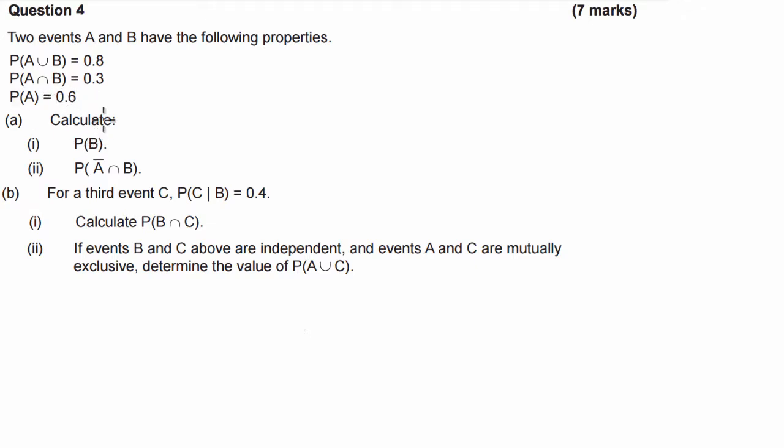Calculate the probability of B. Okay, so there are two ways we can go about this. First of all, we could just quickly draw a Venn diagram, or the second way is we can use the addition rule with probability where we have